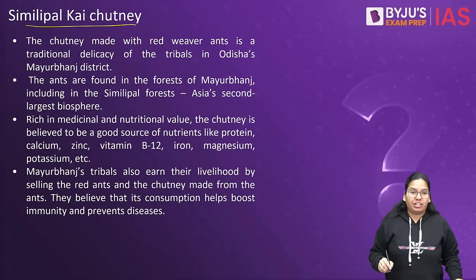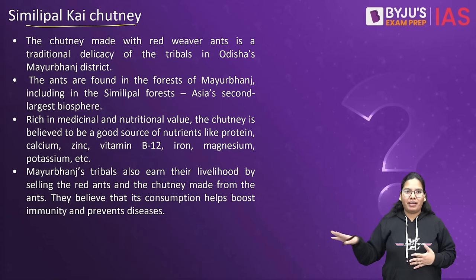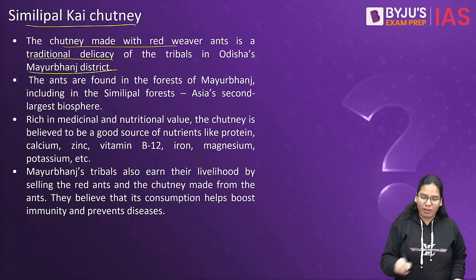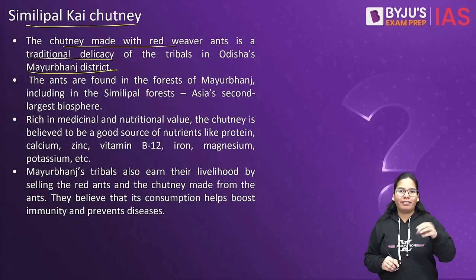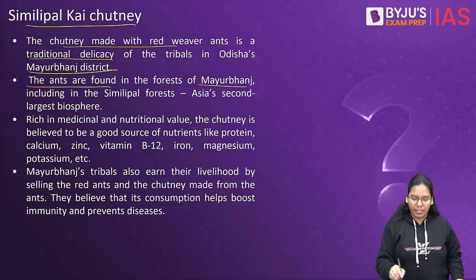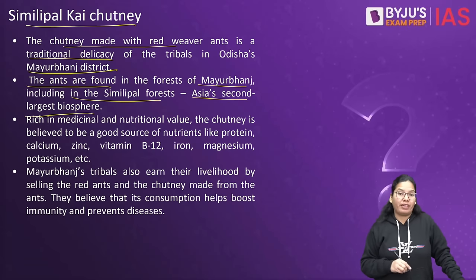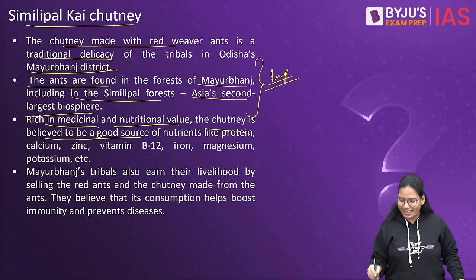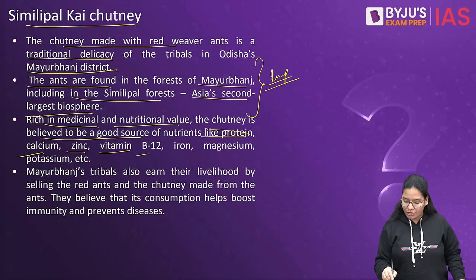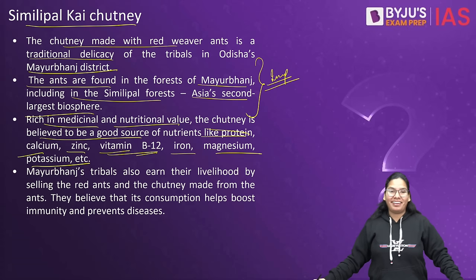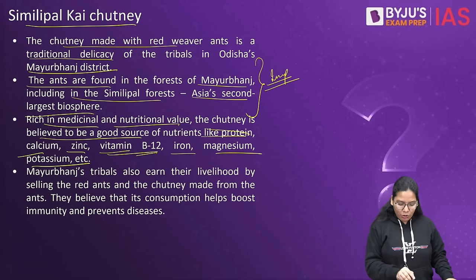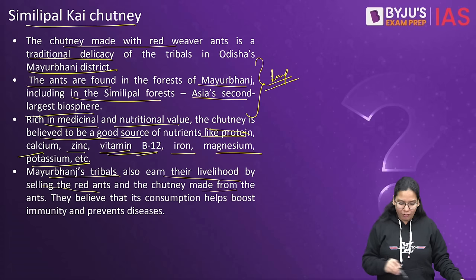Fifth product: Chapda chutney — a very unique kind of chutney made with red weaver ants. It is a traditional delicacy of the tribals in Odisha's Mayurbhanj district. These ants are found in the forests of Mayurbhanj, including the Simlipal forest — Asia's second largest biosphere. The chutney is rich in medicinal and nutritional value, being a good source of protein, calcium, zinc, vitamin B12, iron, magnesium, and potassium. Mayurbhanj tribals also earn their livelihood by selling this red ant chutney, and they believe its consumption helps boost immunity and prevents disease.